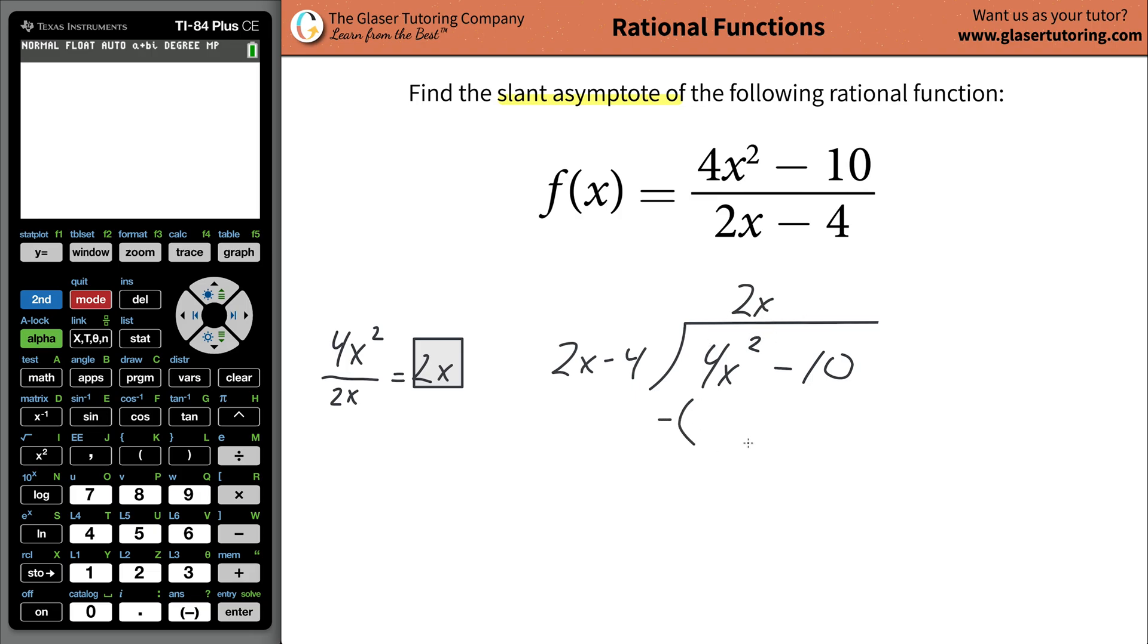After you plug that in, then you're going to set up your subtraction. We're going to take this term of 2x and multiply it by each of the terms of your original denominator. So 2x times 2x is 4x squared, and if you did this correctly, it should match exactly. Then take the 2x and multiply it by the negative 4, which will be negative 8x.